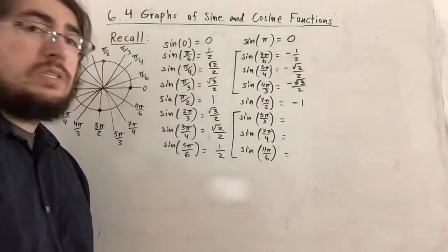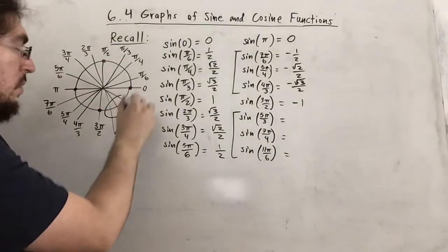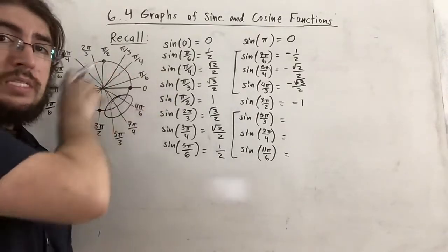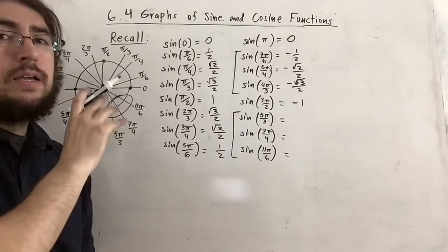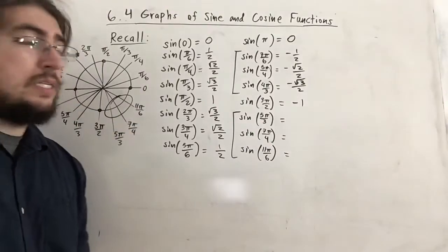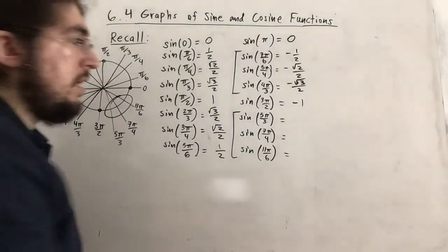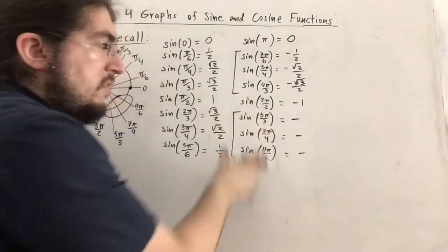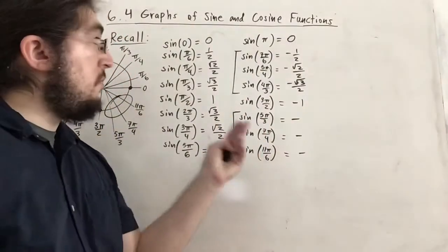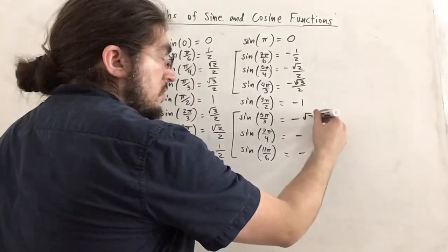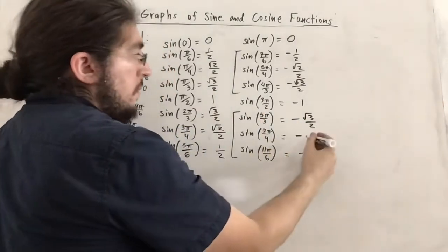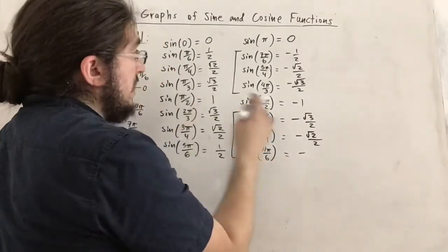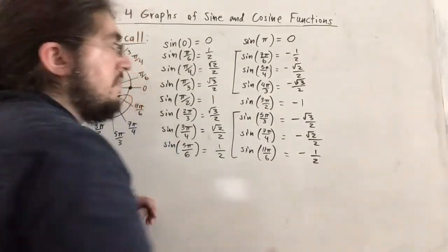The remaining three values are in the fourth quadrant. By 'All Students Take Calculus,' that's 'C' — cosine is only positive there, sine is negative. Covering the numerators again gives sine of π/3 = radical 3 over 2, π/4 = radical 2 over 2, and π/6 = 1/2 — but all negative. So we get negative radical 3 over 2, negative radical 2 over 2, and negative 1/2.